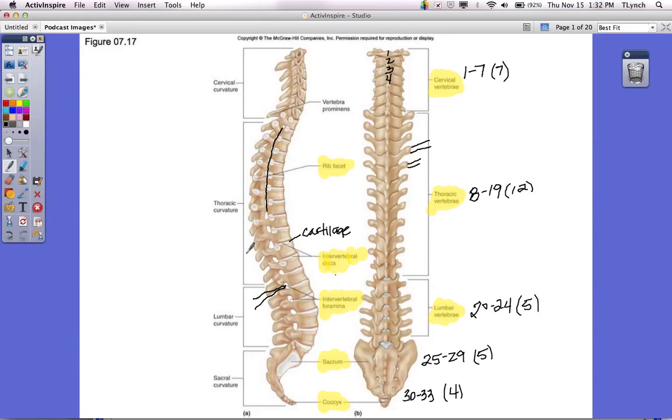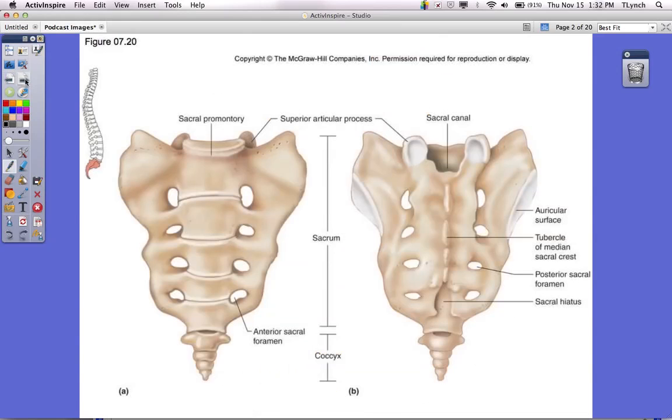So that is your vertebral column. And I believe next we're going to move on to the sacrum and the coccyx. So here we go. It's a better view of our sacrum and our coccyx. So things that you were supposed to label on here, definitely should know that this is your sacrum bone. And from here down, this is your coccyx or your tailbone.